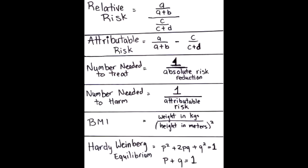What is the equation of Hardy-Weinberg equilibrium? The equation of Hardy-Weinberg equilibrium is P squared plus 2PQ plus Q squared equals 1, and that in turn is P plus Q equals 1.